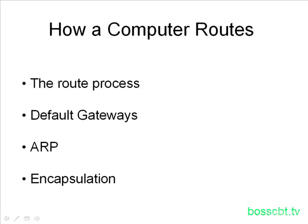We'll focus on computers in this tutorial, and we'll take a look first at the routing process — what decisions do they make in order to make a routing decision, and what factors do they consider? We'll also introduce the concept of default gateways and figure out what they are, when they are used, and when they're not used.